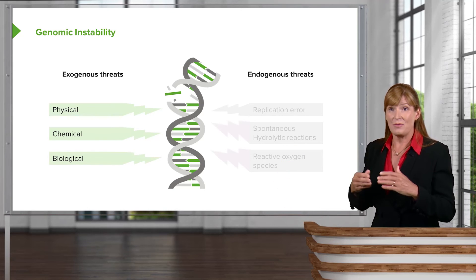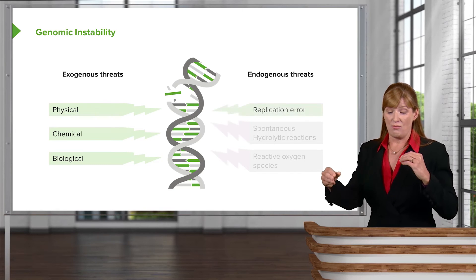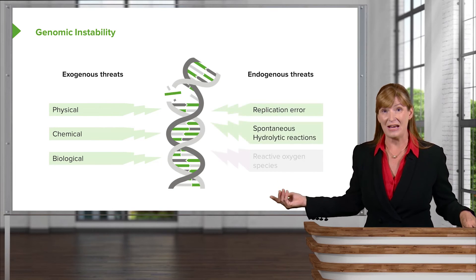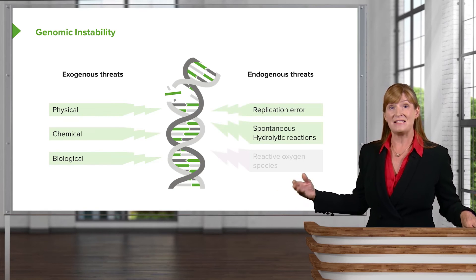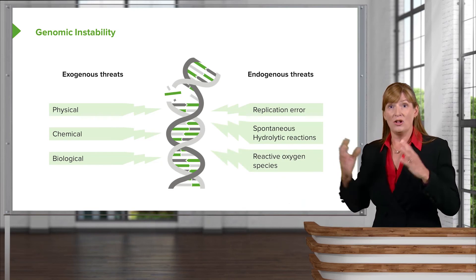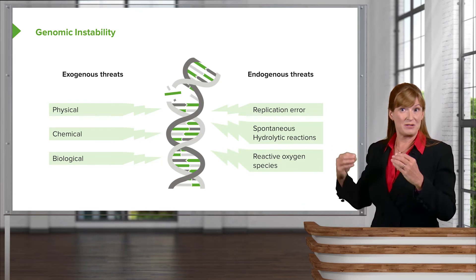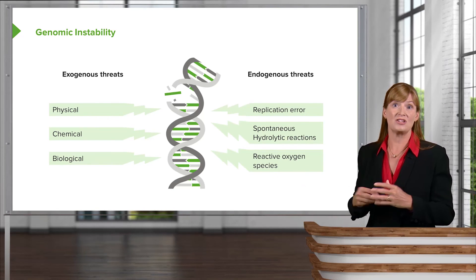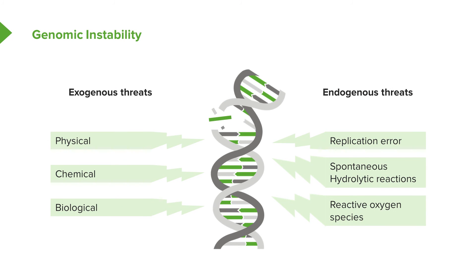In our endogenous threats, we are considering replication errors, spontaneous hydrolytic reactions, as well as damage that can be done by reactive oxygen species. All of our metabolic processes — cell respiration — the final electron acceptor is oxygen. Oxygen, when we split O2 into one half of an O2, is highly electronegative and can run around and do all sorts of damage to our DNA. It's kind of paradoxical: we require oxygen to live, but oxygen, in the end, is potentially what actually leads to aging and eventually death.